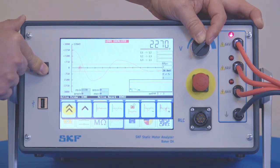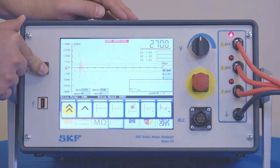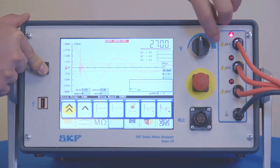There's the partial discharge inception voltage and the repetitive voltage. I'm going to go ahead and stop ramping there. And now I'm going to ramp it down.